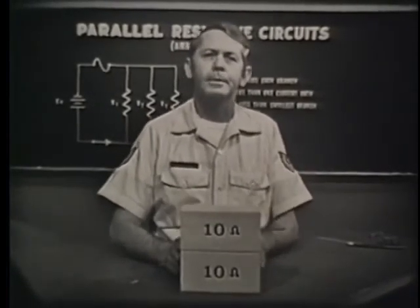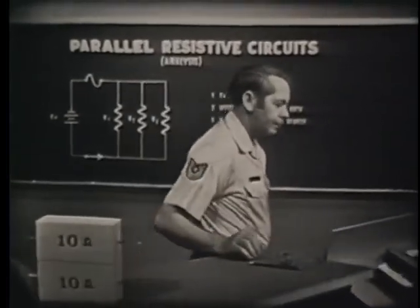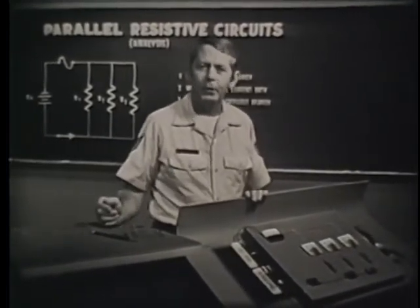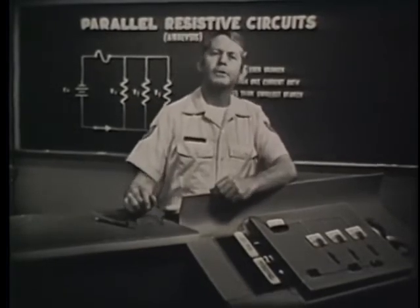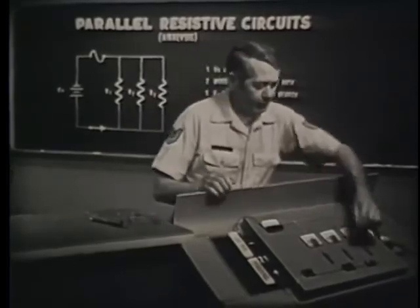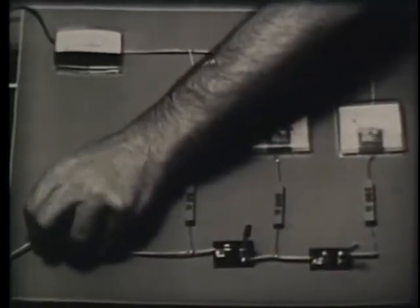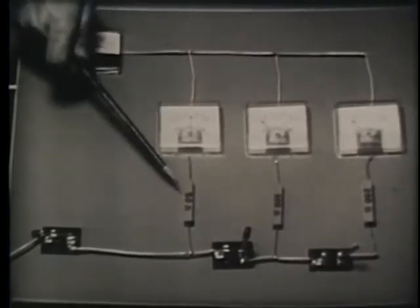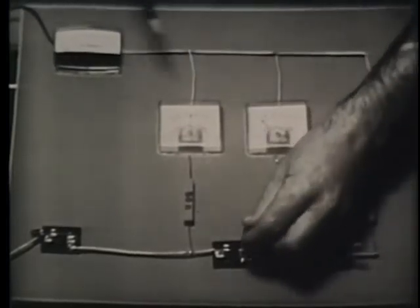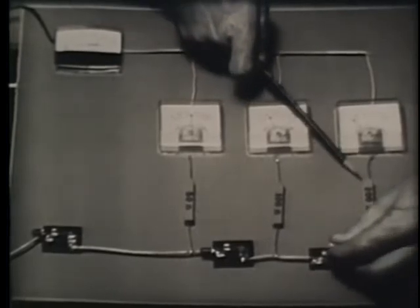Essentially, the same thing happens in a parallel circuit. Each time we add a resistor in parallel, we increase the cross-sectional area of the total resistance. And remember, if cross-sectional area increases, total resistance decreases. When we open all switches, there's no current because there's infinite resistance between the battery terminals. Closing one switch adds a path, reducing resistance from infinity to a specific value. Adding another branch increases current, so total resistance decreases. Adding still another branch increases current, and total resistance decreases further.